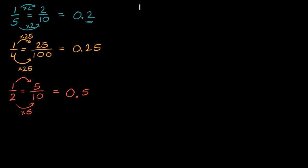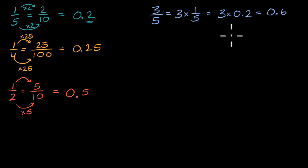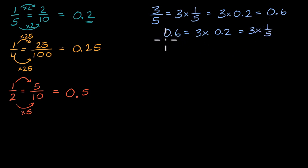For example, if someone asks: what is 3/5 as a decimal? In your head you can say: 3/5 is 3 times 1/5, and I know 1/5 is 2 tenths, so that's 3 times 2 tenths. Well, 3 times 2 is 6, so 3 times 2 tenths is 6 tenths. And you could go the other way: 6 tenths equals 3 times 2 tenths, and 2 tenths you know is 1/5, so 6 tenths equals 3 times 1/5, which is 3/5.